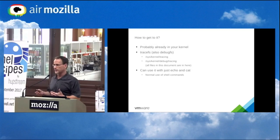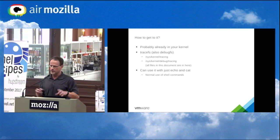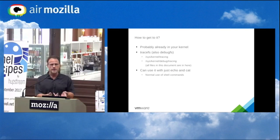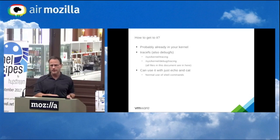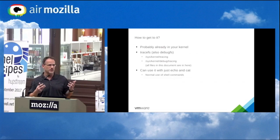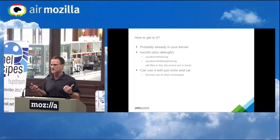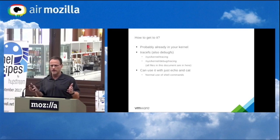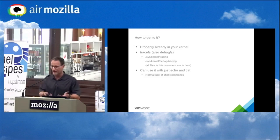For backwards compatibility, when you mount DebugFS you automatically get TraceFS at sys/kernel/debug/tracing. But if you don't want to mount DebugFS — which could be a security concern — if you have ftrace enabled, there'll be a sys/kernel/tracing directory you can mount TraceFS to separately.